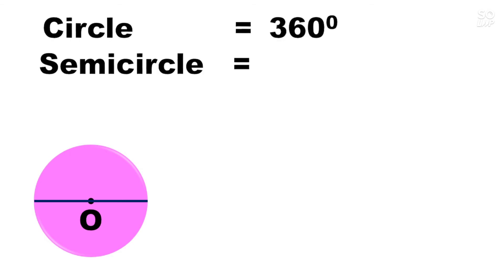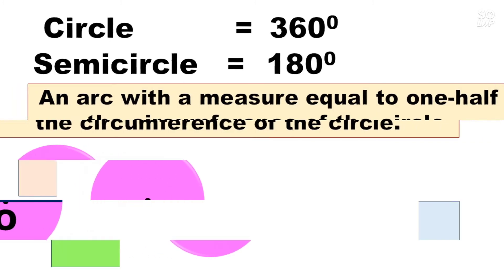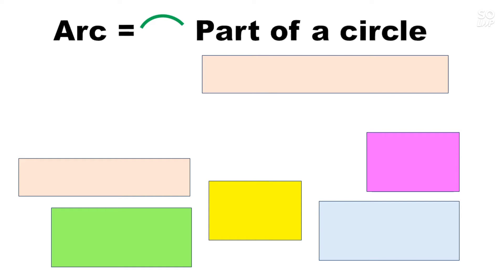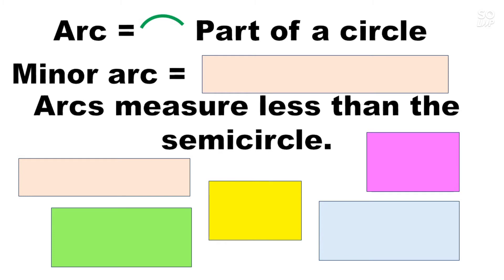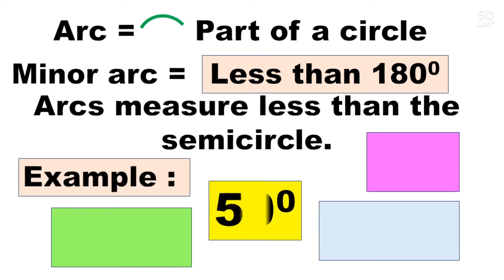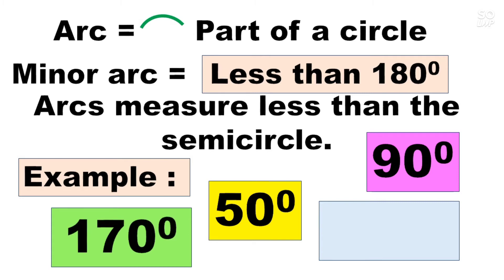Recall that the full circle is 360 degrees and the semicircle is 180 degrees. An arc is a part of a circle. The minor arc is an arc that measures less than the semicircle — that is, less than 180 degrees. Examples of minor arc measures include 50 degrees, 90 degrees, 170 degrees, and 10 degrees.